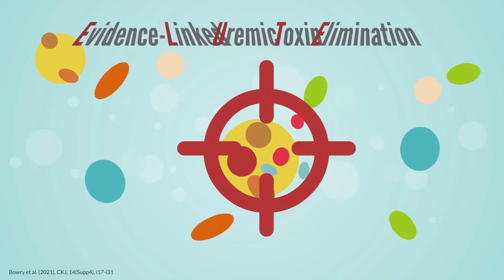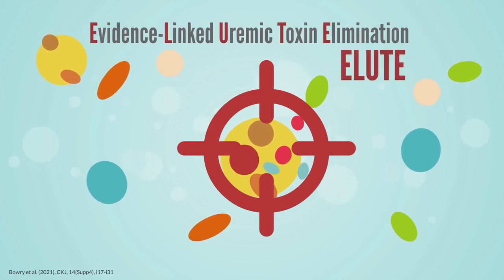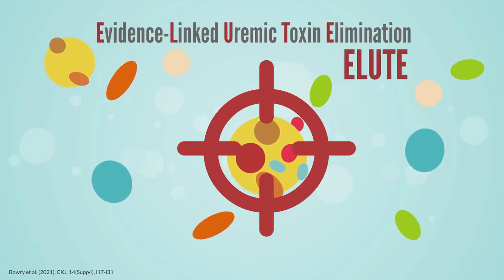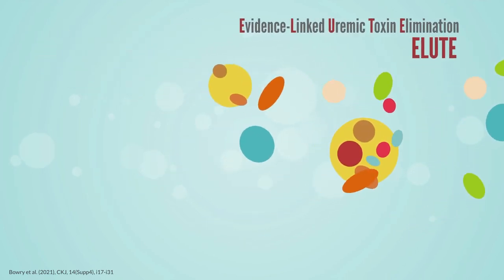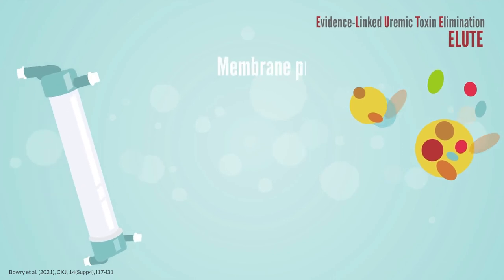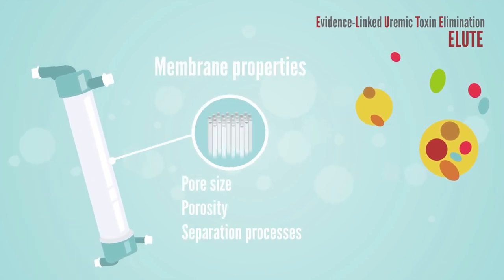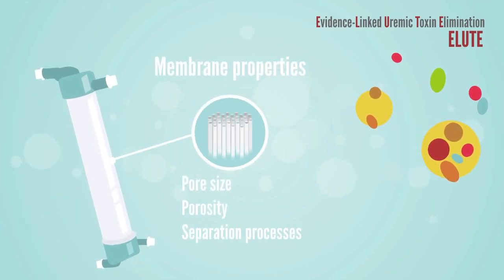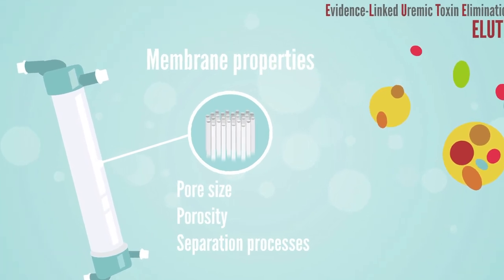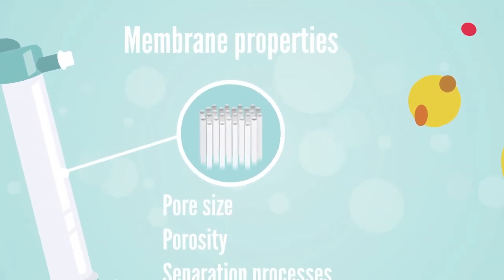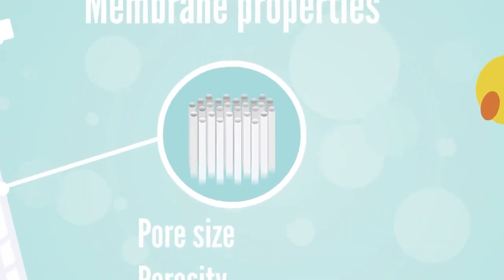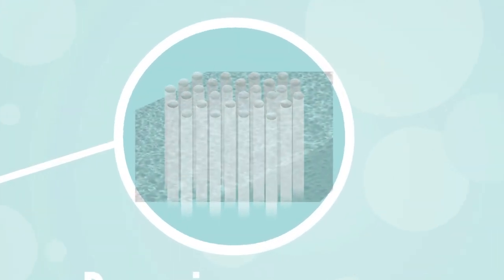Evidence-linked uremic toxin elimination: these clusters correlate to key membrane properties such as pore size, porosity and separation processes, considering the capabilities and limitations of current dialysis membranes to remove uremic toxins.